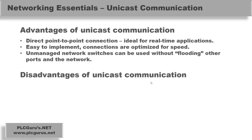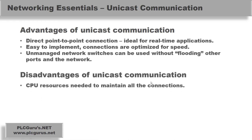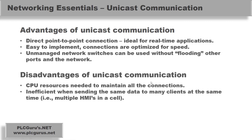Some disadvantages of Unicast: CPU resources are needed to maintain all the connections. The processor has to maintain all of those different connections, and there is obviously a limit because every connection takes away valuable resources. It's also inefficient when sending the same data to many clients at the same time — multiple HMIs in a cell is probably the best example — and it leads to poor network performance and utilization.